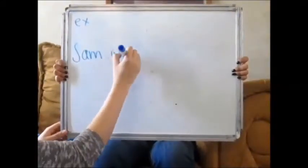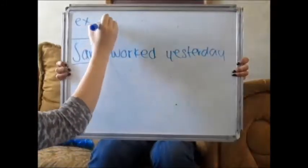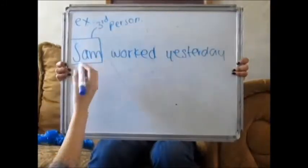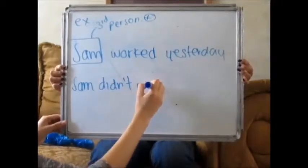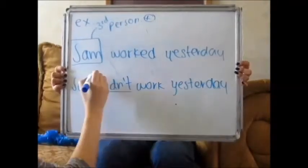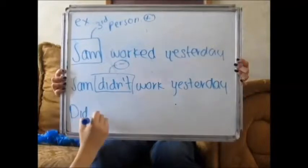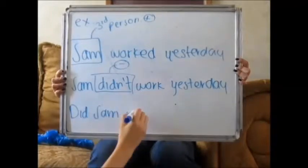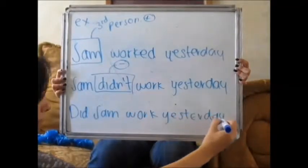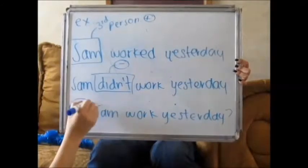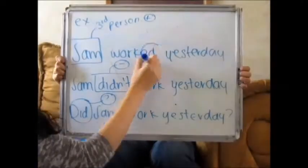Another example for third person in positive is: Sam worked yesterday. In negative we use didn't — Sam didn't work yesterday — and in that example we don't add anything to the verb, we use it in the base form. And in interrogative form we say: did Sam work yesterday?